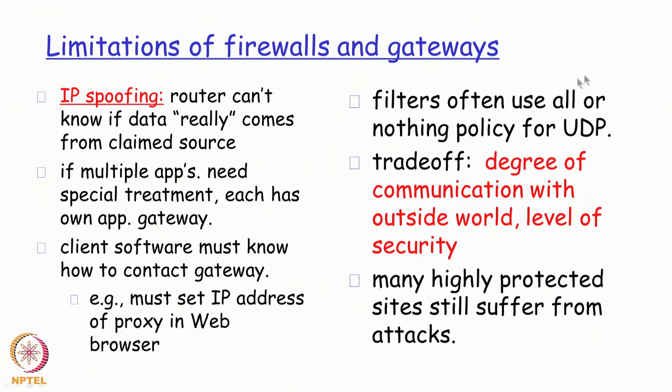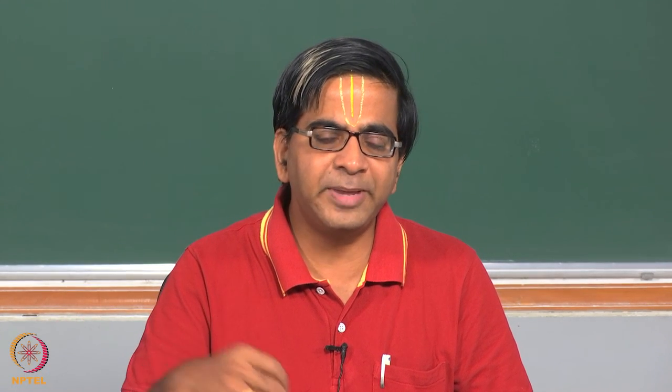There is a common trade-off: the degree of communication with the outside world and the level of security are always in tension. The more communication desired with the outside world, the lesser the level of security, or a hit on performance. A very high degree of performance cannot coexist with hundreds of filtering rules on the firewall, because for every packet passing through, all rules are checked — and as the number of rules increases, packet latency increases. There is always a trade-off between the amount of network security needed versus the performance desired, and this is a very delicate balance that a network administrator typically tries to achieve.